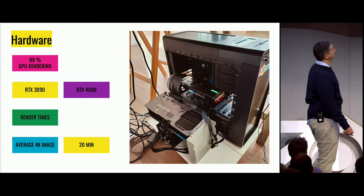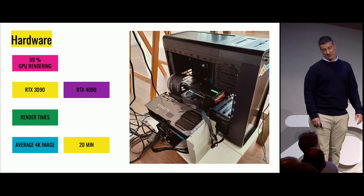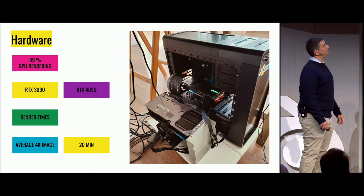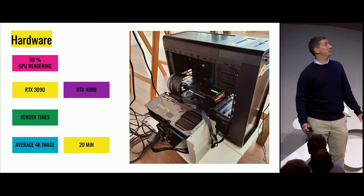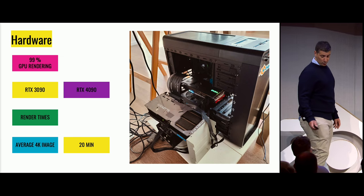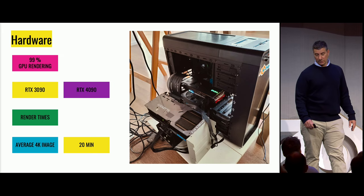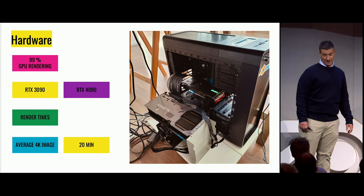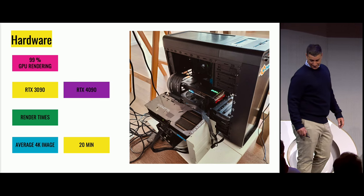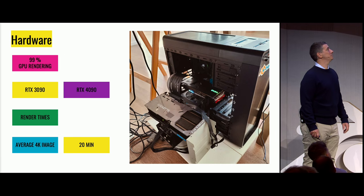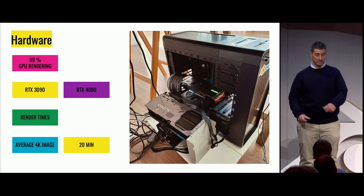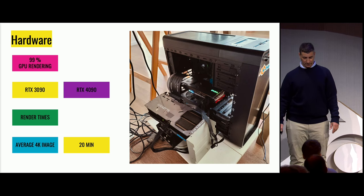This is a little Frankenstein. We render almost 99% with the GPU, so we built a setup with two GPUs — one 3090 and one 4090. They render together. It's a pity you can't combine the VRAM, as was possible before with SLI. But still, it's a good setup to render fast. The average render time for a 4K image is around 20 minutes, sometimes much less — but I don't want to promise anything. The only problem is fitting everything into the 24 gigabytes of GPU memory. Render times compared to CPU are amazing.